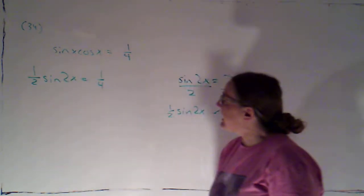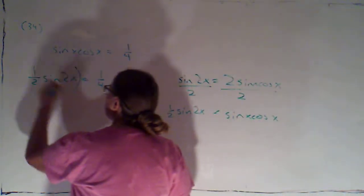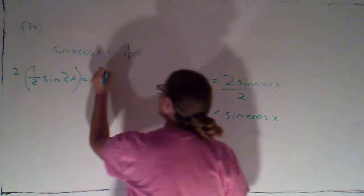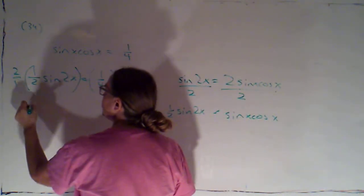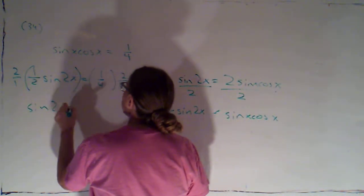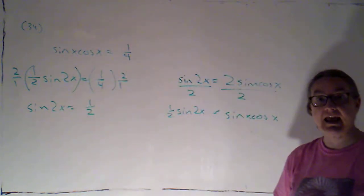Alright. And we've got one-half sine 2x equals one-fourth. So I'm going to isolate the trig function by multiplying both sides by two. That's essentially two over one. So we'll get sine of 2x is equal to two-fourths, which reduces to one-half.